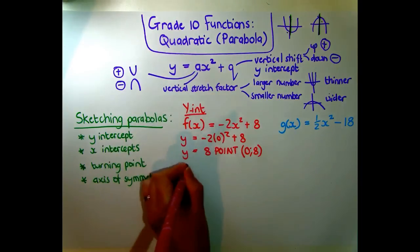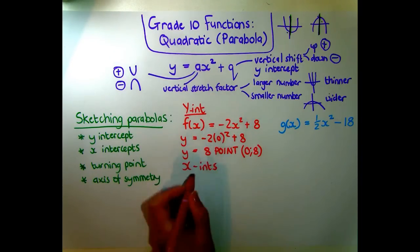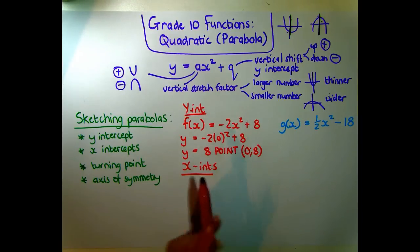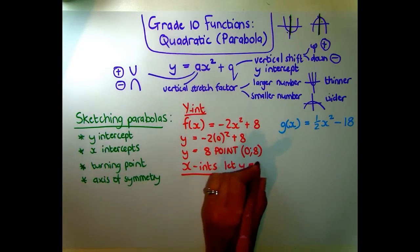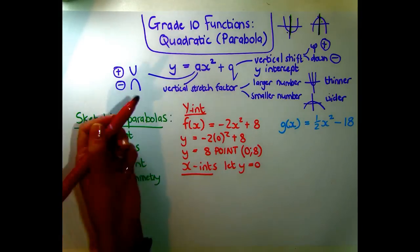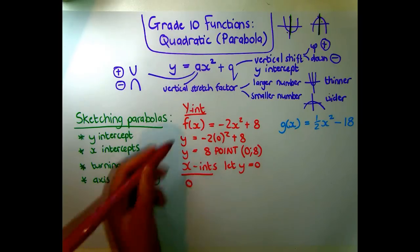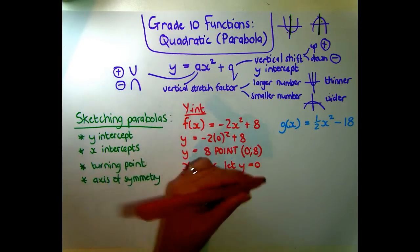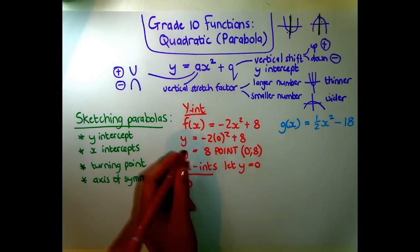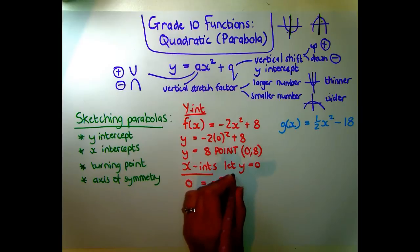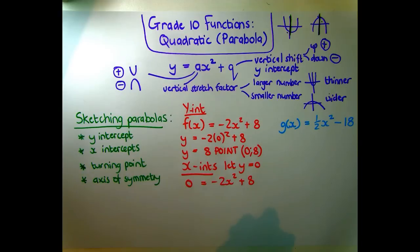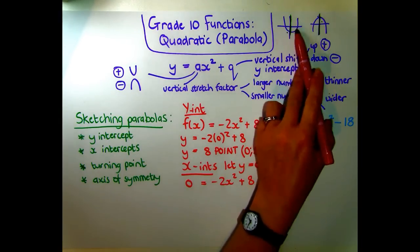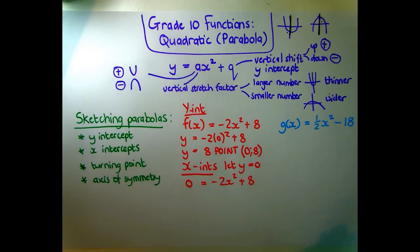Next we find the two x-intercepts, which are the roots of the equation. For x-intercepts we let y equal zero. Setting f(x) = 0 gives 0 = -2x² + 8. This is a quadratic equation with an x squared, so we'll get two answers — and they'll be symmetrical about the y-axis.